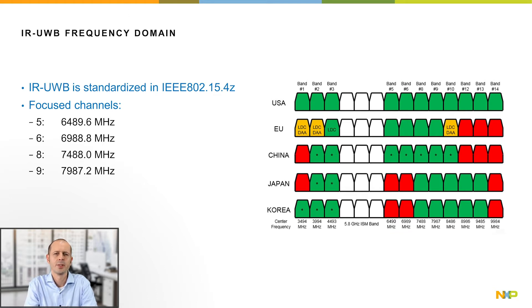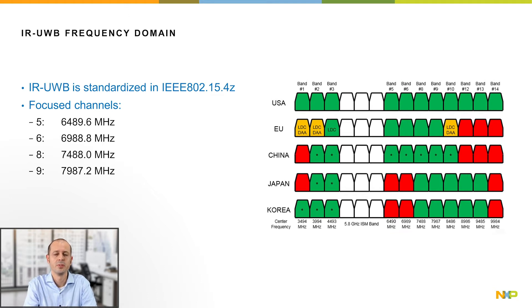The primary use case of UWB technology is secure and accurate ranging, where two devices are able to securely and accurately locate each other.